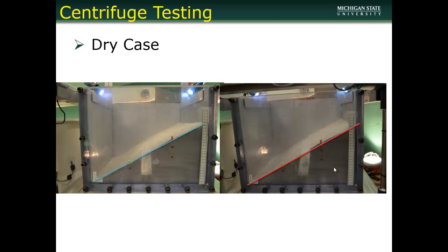Using the simplified model, we tested it in the centrifuge. On the left-hand side we see before testing, and on the right-hand side we see after testing. You can see there's no slope failure — the push pins are still in their same place and there is no change in the slope. No failure for the dry case.